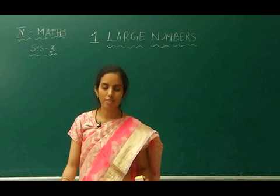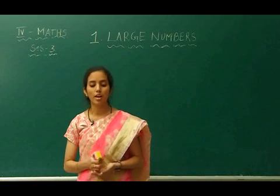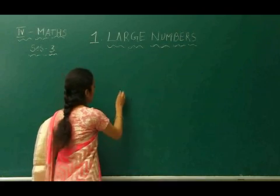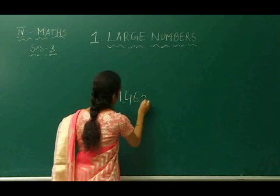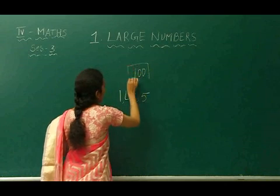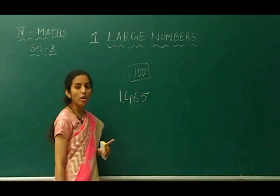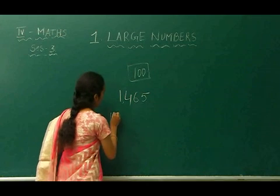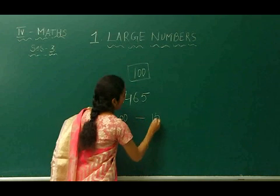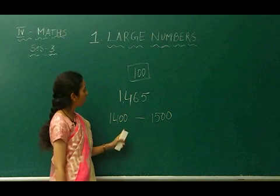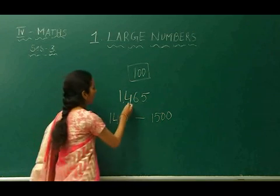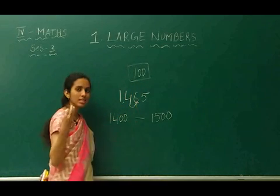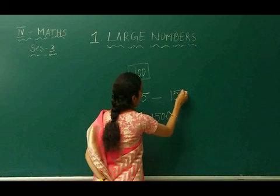Fourth question. 1,465 people were expected for a school function. How many chairs should be hired, rounded to the nearest hundred? 1,465 — how many chairs should be ordered if the number is rounded to 100? You round the number by 100 by writing its hundreds limits: 1,400 to 1,500. The number is in between 1,400 and 1,500. We have to check the digit in the tens place, which is 6. 6 is above 5, so we round it up to 1,500.